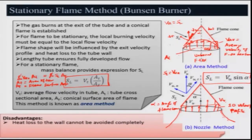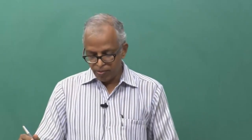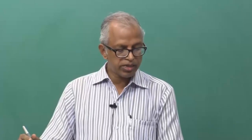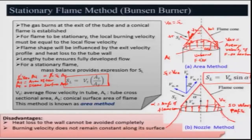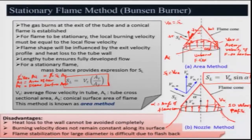The disadvantages of the Bunsen burner method are: heat loss to the wall cannot be avoided completely, so there may be small errors; the burning velocity does not remain constant along the flame surface; and flame stabilization for large diameter burners is difficult due to flashback — particularly when the fuel-air mixture is lean, the flame tries to flash back due to the low burning velocity.